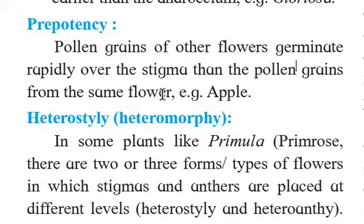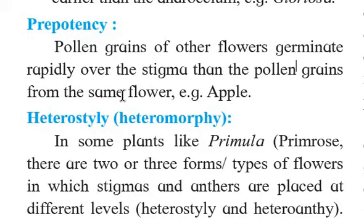The pollen grain from a different plant of the same species gets deposited on the stigma of the first plant and rapidly germinates, after which fertilization also occurs and a zygote develops. The plant's own pollen grain does not get a chance. So pollen grains of other flowers germinate rapidly over the stigma than the pollen grains from the same flower.